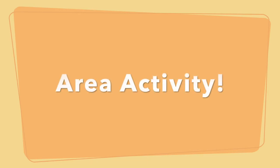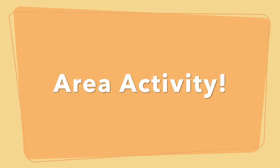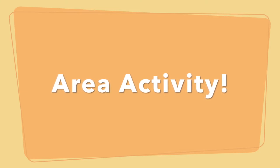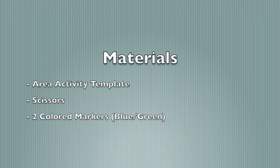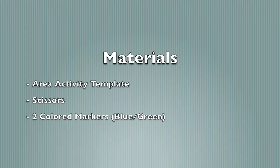Hey guys, my name is Soita, and I'm a STEM for Success mentor. In today's activity, we'll discover how to find areas of four different shapes by transforming them into simpler shapes. For this activity, you'll need the area template, scissors, and two colored markers. I'll be using blue and green.